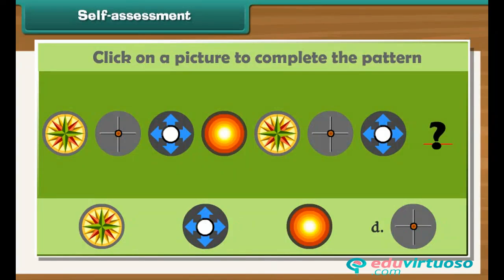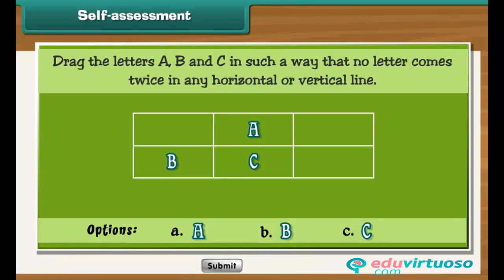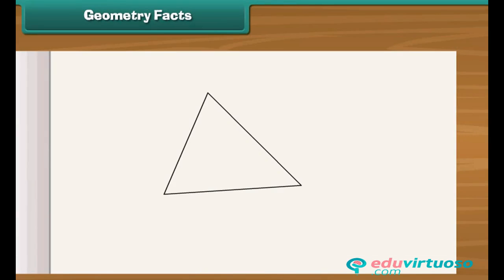Let us do an interesting activity. Click on the picture to complete the pattern. Here is an opportunity for you to do the activity yourself. Drag the letters A, B and C into the cells in such a way that no letter comes twice in any horizontal or vertical line.